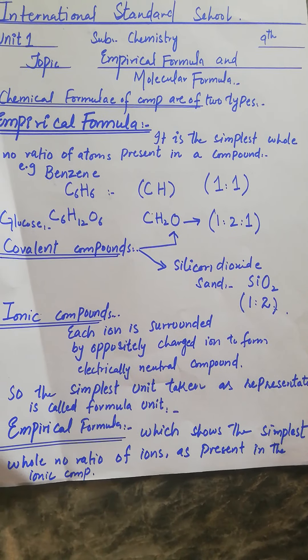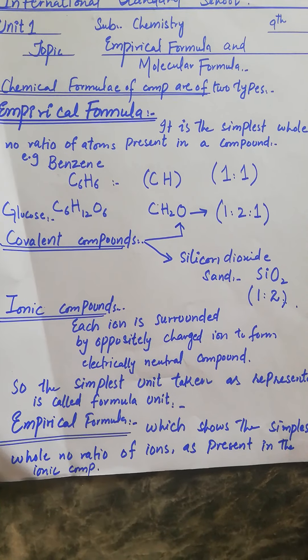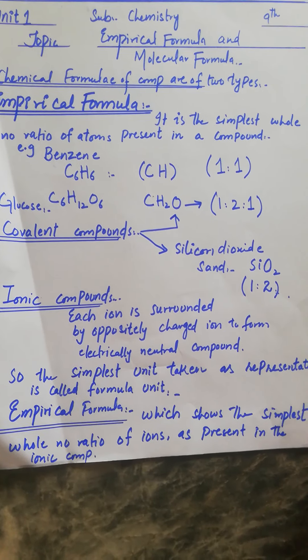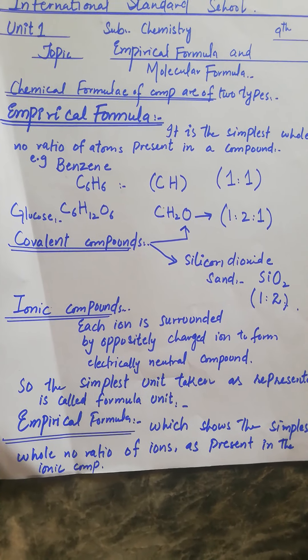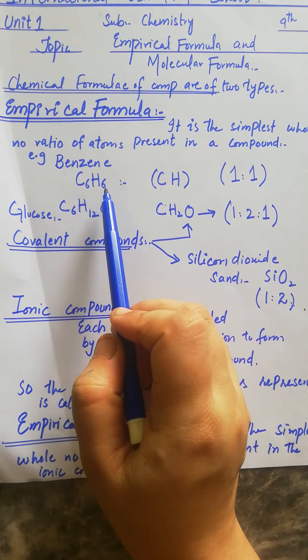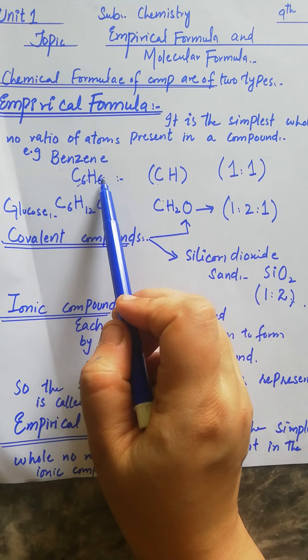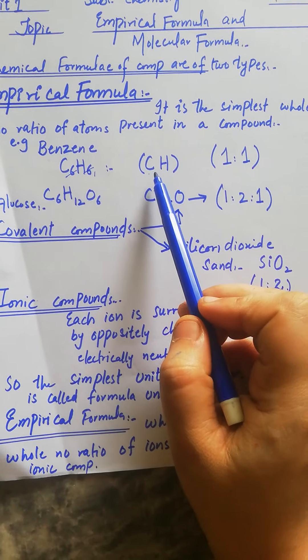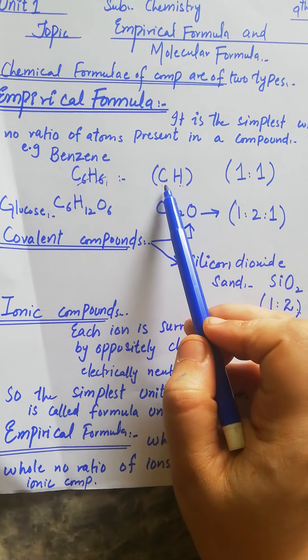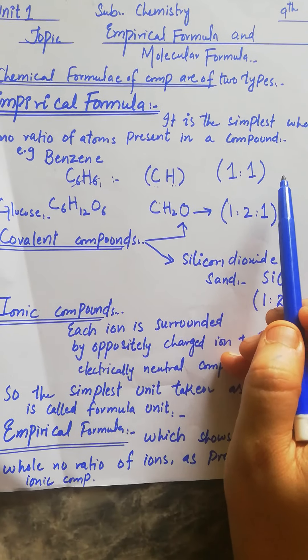For example, we take benzene. Benzene has two elements: carbon and hydrogen. If you look at it, the simplest formula is CH. C6H6 is the molecular formula, but the simplest ratio is 6:6, which simplifies to 1:1. So between these two elements, the simplest ratio is one carbon and one hydrogen.